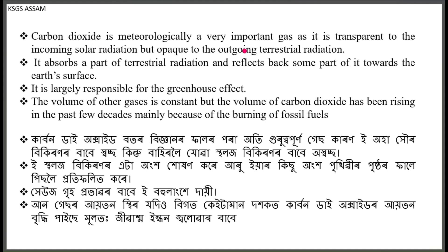Carbon dioxide is meteorologically a very important gas as it is transparent to incoming solar radiation but opaque to the outgoing terrestrial radiation. It absorbs part of terrestrial radiation and reflects some back towards the earth's surface. It is largely responsible for the greenhouse effect.